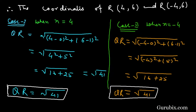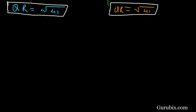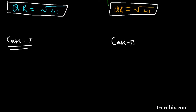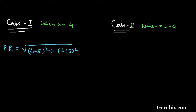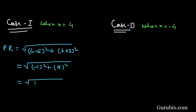Now we shall find the distance PR. There are also two cases. In Case 1, when x = +4, PR = √[(4 - 5)² + (6 + 3)²] = √[(-1)² + 9²] = √[1 + 81] = √82.